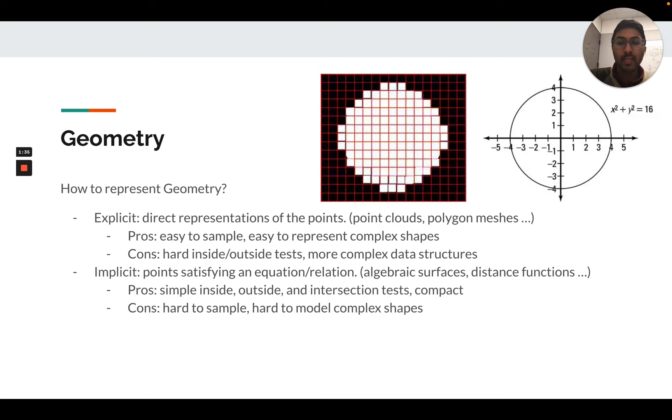These explicit geometric representations are really flexible. You can represent complex geometry by scaling up the size of the data structure. They're easy to sample from. There are some cons though. It's hard to test whether a point is inside or outside the surface, and doing bookkeeping in the data structure can be complicated.